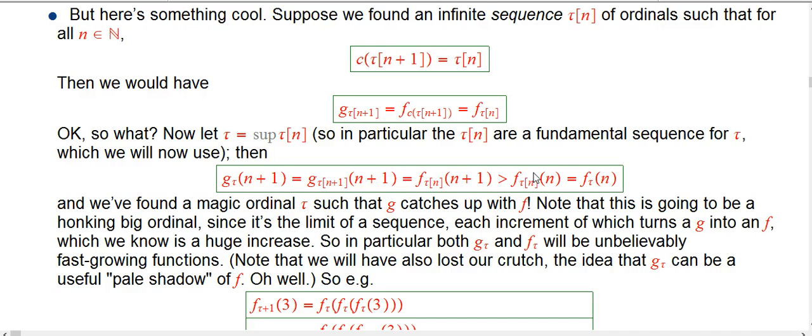We're going to use that to define g's and f's as applied to tau. So then what do we know about g sub tau of n plus 1? By definition, you use the n plus first element of the sequence, the fundamental sequence for tau, plug that into the index for g, evaluate it at n plus 1.